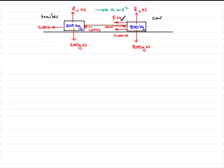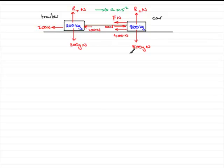To find F, we need to consider the trailer first, because what I need to do is find the acceleration. Then I'll consider the car and use the acceleration found from the trailer, pass it through into the car problem, resolve, and we should be able to find F. So let's start with the trailer.